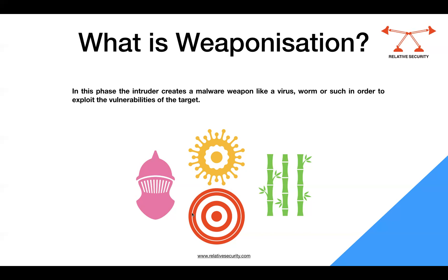The next thing naturally would be how those vulnerabilities can be exploited. Weaponization, in this perspective, is the preparation work for the attacker — based on the vulnerabilities and information gathered, they are going to create new malware like a virus, worm, or any other exploit which can be used to exploit a vulnerability and achieve their target.